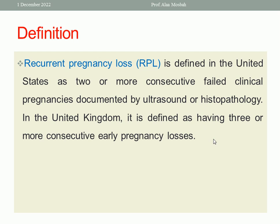While in the United Kingdom, the definition is different: it is defined as three or more consecutive pregnancy losses, and they include biochemical pregnancies — meaning pregnancies diagnosed by pregnancy test. This is likely why the threshold is three or more, as the number of detected losses is higher when biochemical pregnancies are counted.